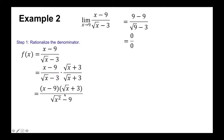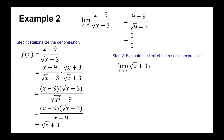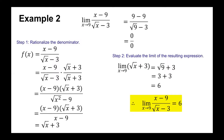The denominator (√x - 3)(√x + 3) equals √(x² - 9), which is a difference of two squares. Simplifying: √(x² - 9) = x - 9. So we observe there is a common factor of (x - 9) in the numerator and denominator, which we cancel. The remaining expression is (√x + 3). For step 2, we evaluate the limit of (√x + 3) as x approaches 9. By direct substitution: √9 + 3 = 3 + 3 = 6. Therefore, the limit of (x - 9)/(√x - 3) as x approaches 9 is equal to 6.